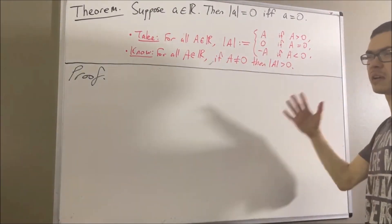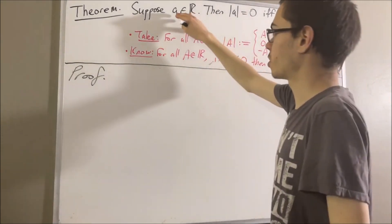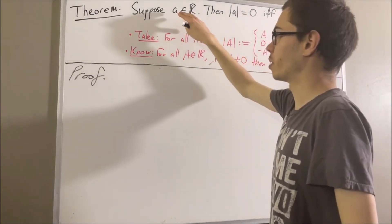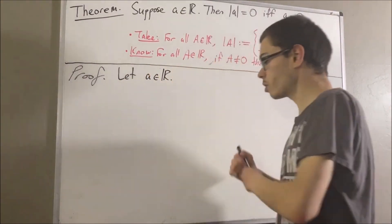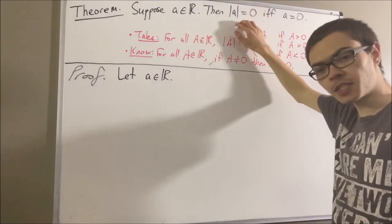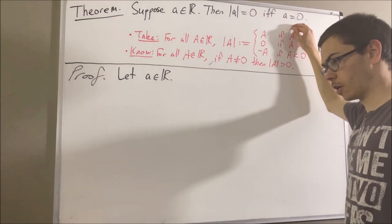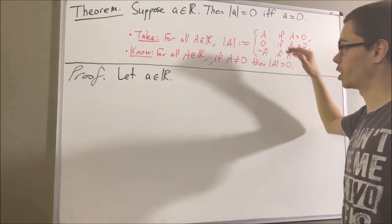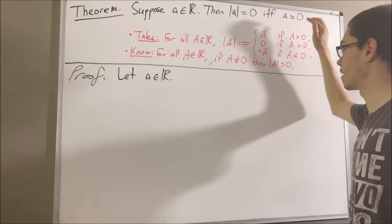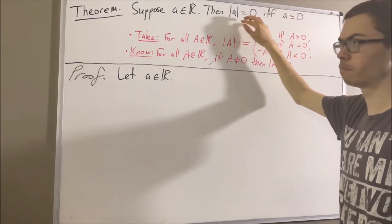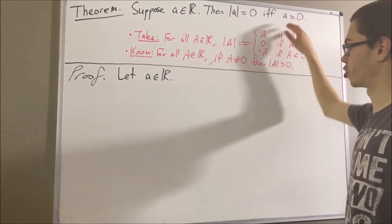So now let's get into proving the theorem. To start out the proof, let's give ourselves an arbitrary real number a. What we want to do is show that the absolute value of a equals zero if and only if a equals zero. To show that, we can show each direction: if the absolute value of a equals zero, then a equals zero, and if a equals zero, then the absolute value of a equals zero. Let's start with the forward direction.